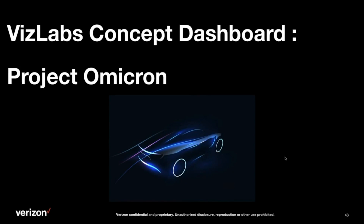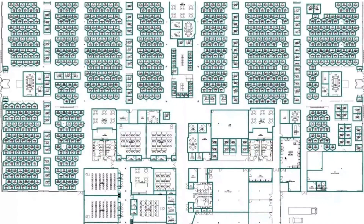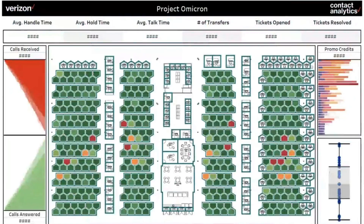I wanted to showcase my concept dashboard for this year, named Project Omicron. When we talk about spatial mapping, we usually think of outdoor geospatial mapping — but some of those same techniques, brought indoors, can help us get tremendous location-based analytics and situational awareness to solve optimization problems. This is the call center floor plan of an actual Verizon call center in Tennessee, and the same techniques used to map zip codes — heat maps, satellite maps, street views — are implemented to build a dashboard that analyzes demand and supply of customer service in near real time.